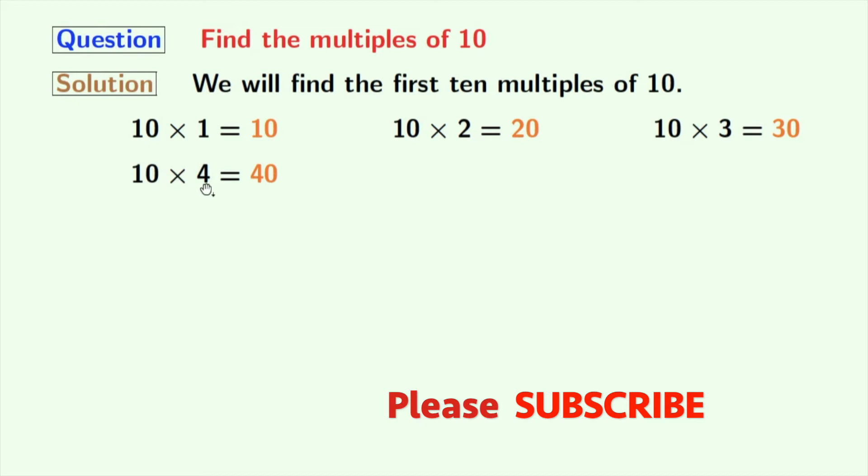Multiplying 10 with 4 we get 40. Multiplying 10 with 5 we get 50. Multiplying 10 with 6 we get 60. Multiplication of 10 and 7 gives us 70.